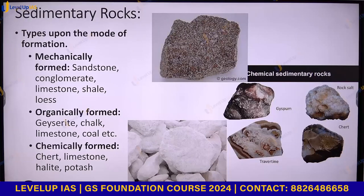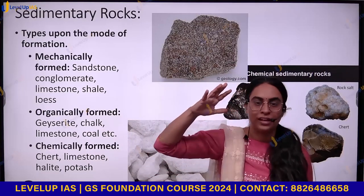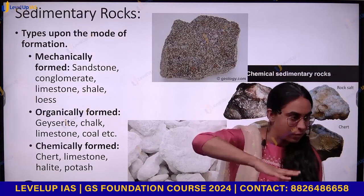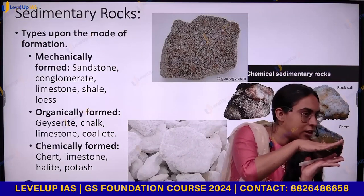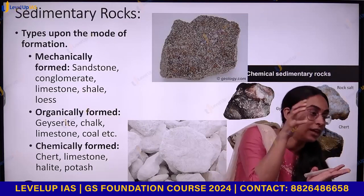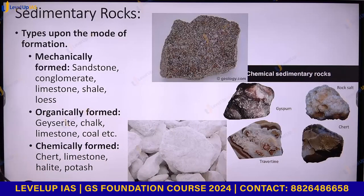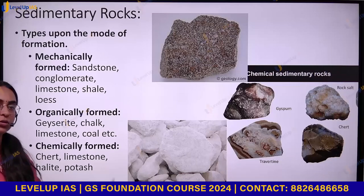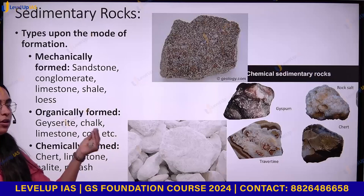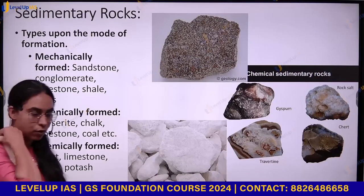Organically formed examples include coal, limestone, and chalk. The third mode is chemically formed. Chemically formed examples are limestone, halite, and potash — these chemical reactions cause these rocks to be formed. Limestone can appear in all three categories: mechanically formed, organically formed, or chemically formed.